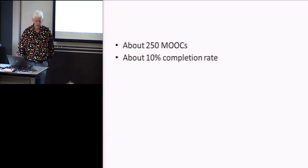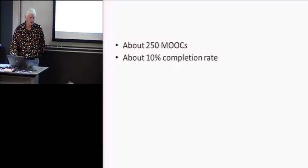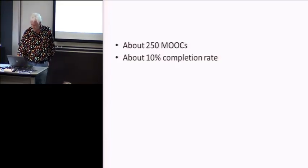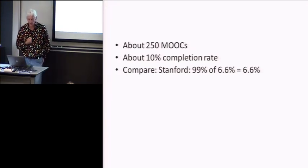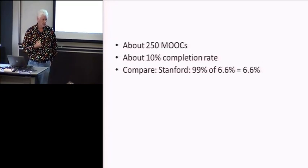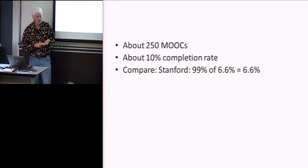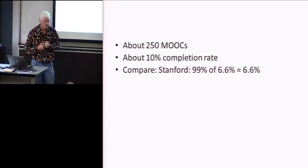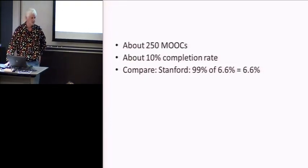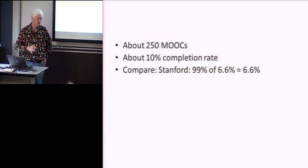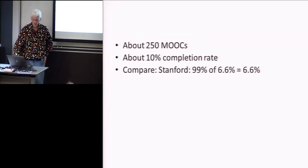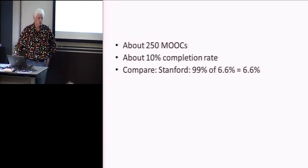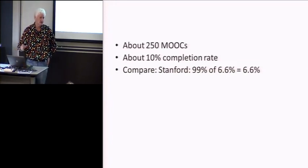University of Michigan does much better than that, right? On the other hand, let's compare to Stanford, where my online class, 99% of the students finished. So we had 300 students, only three of them dropped out for whatever reason. So that seems like you're getting 99%. On the other hand, Stanford only admits 6.6% of their students. So of the people who potentially might have wanted to take that class, multiply 0.99 times 6.6, and that's only 6.6% got to participate in that class.